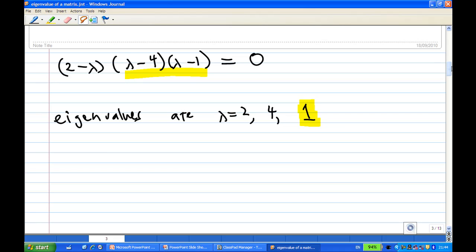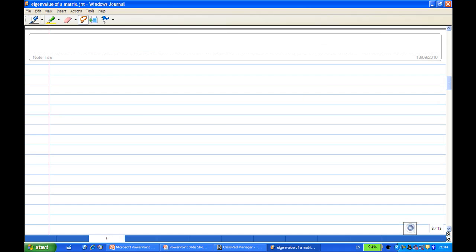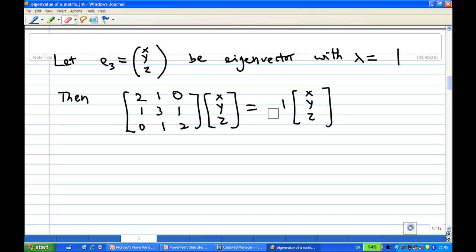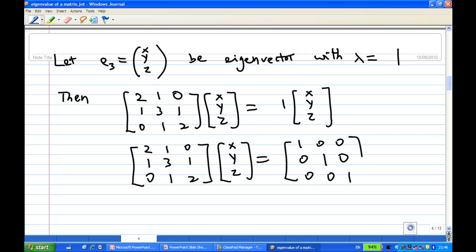So now, we are going to find the remaining eigenvector corresponding to this eigenvalue 1. So, let e3 equal to [x,y,z] be an eigenvector with lambda equal to 1. That means A times e3 equal to 1 times e3.